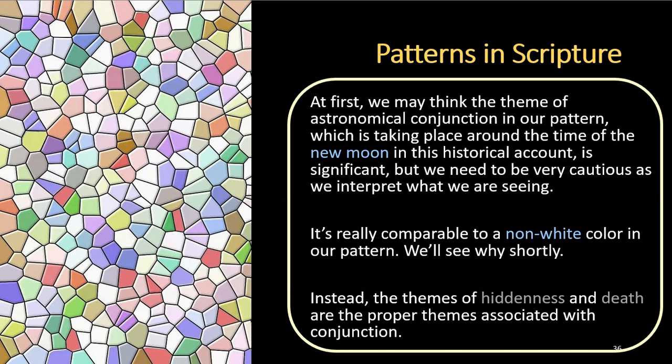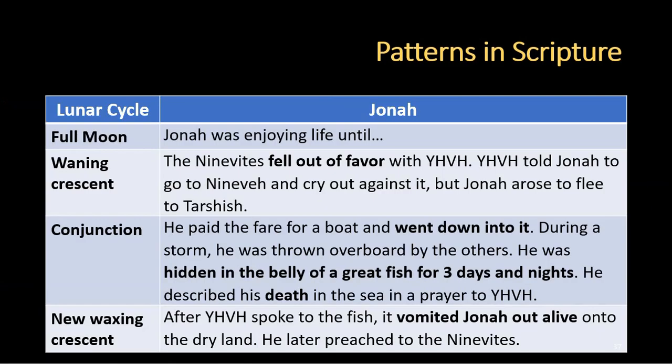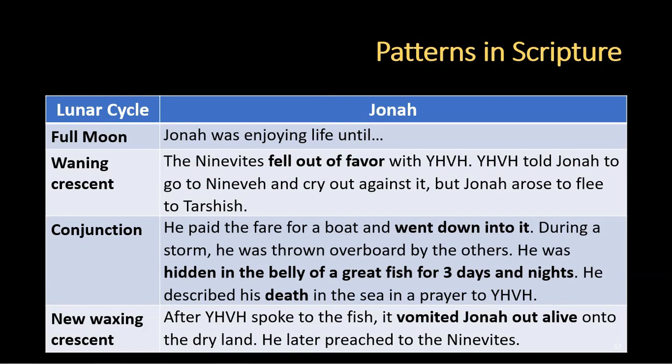Now let's look at the account of Jonah. Jonah was enjoying life until the Ninevites fell out of favor with Yehovah, and Yehovah told Jonah to go to Nineveh and cry out against it. But Jonah arose to flee to Tarshish — he paid the fare for a boat and went down into it. During a storm he was thrown overboard by the others. He was hidden in the belly of a great fish for three days and nights. He described his death in the sea in a prayer to Yehovah. After Yehovah spoke to the fish, it vomited Jonah out alive onto the dry land, and he later preached to the Ninevites. I hope you can see how these themes are being repeated in account after account.